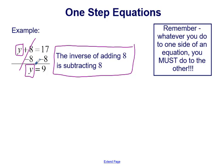Remember, whatever you do to one side of the equation, you must do to the other. So we're not just subtracting 8 from the left side — we're also subtracting 8 from the right side. We're doing 17 minus 8, leaving us with 9. So our solution is y equals 9.